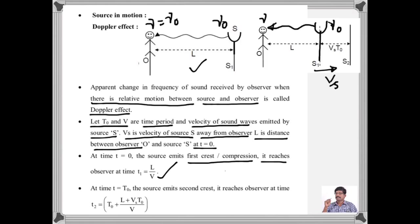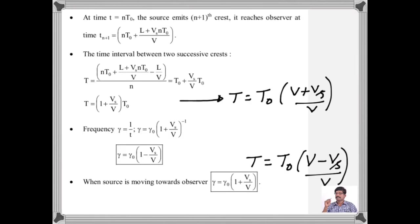After time T₀ — the time period of the source — the source emits the second wave or second crest. It reaches the observer in time T₀ + (L + Vs·T₀)/V, because Vs·T₀ is the distance travelled in time T₀. If we generalize for after N waves, at T = N·T₀, the source emits the (N+1)th crest, which reaches the observer at time N·T₀ + (L + Vs·N·T₀)/V.